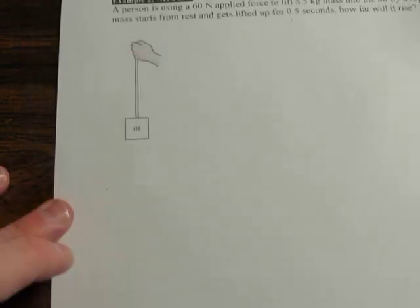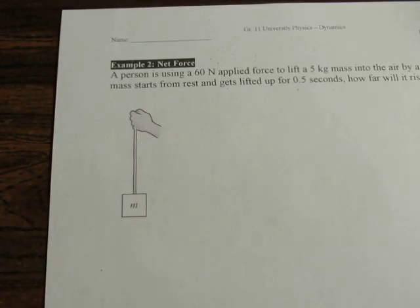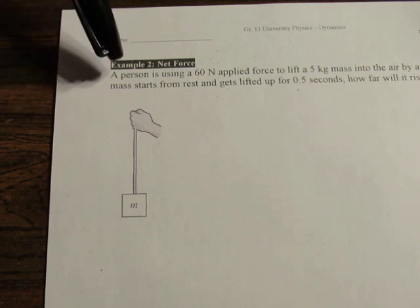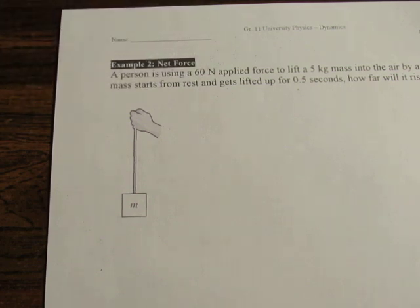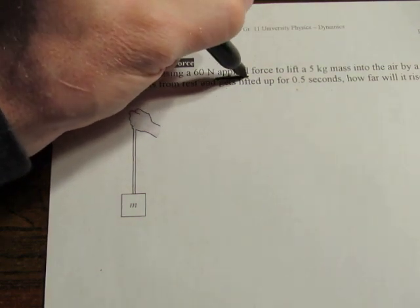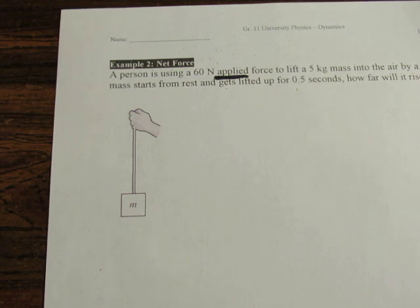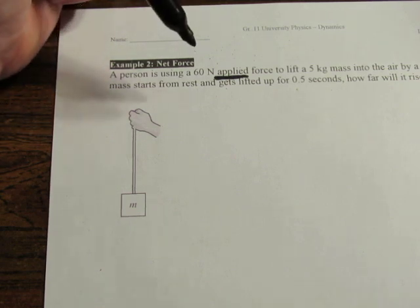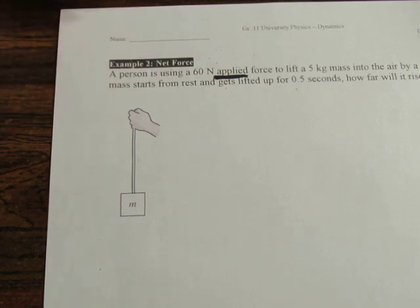Every question would normally be that easy, but here's where we sort of combine what you've been doing in the last couple of days with force of gravity. Objects don't just have one force on them, they usually have more than one force, and you have to work out an overall force. Here is a mass being lifted by a person. The question says a person is using a 60 newton applied force. This is actually a very important word: applied force.